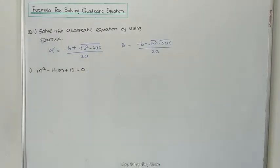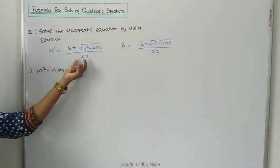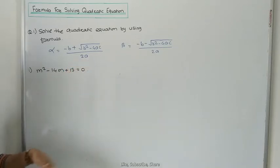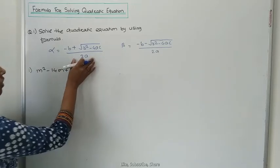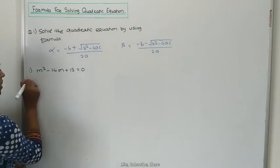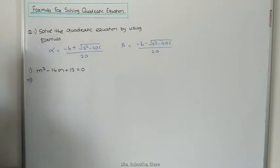In the previous section, we proved this formula, but the proof is not asked in your exam — it is just extra knowledge for how to get the formula. Now, we have to solve the equation M² - 14M + 30 = 0.